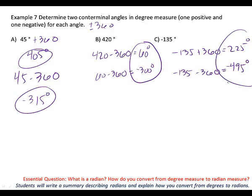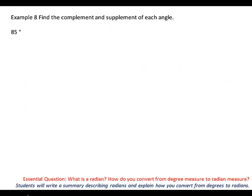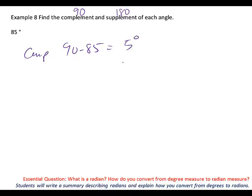The last one we were supposed to have done yesterday — complement and supplement again. For complement, how many degrees? 90. And for supplement, how many degrees? 180. So, for my complement, I'm going to do 90 minus 85, which is going to get me 5 degrees. Make sure it's always positive. For my supplement, I would do 180 minus 85, and I end up with 95 degrees.